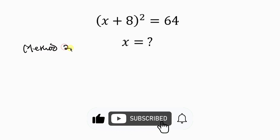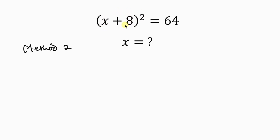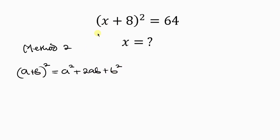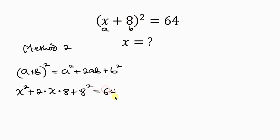For Method 2, we expand the left hand side. The left hand side is of the form (A + B)², which has the identity a² + 2ab + b². By comparison, X represents a and 8 represents b. So we write x² + 2·x·8 + 8².